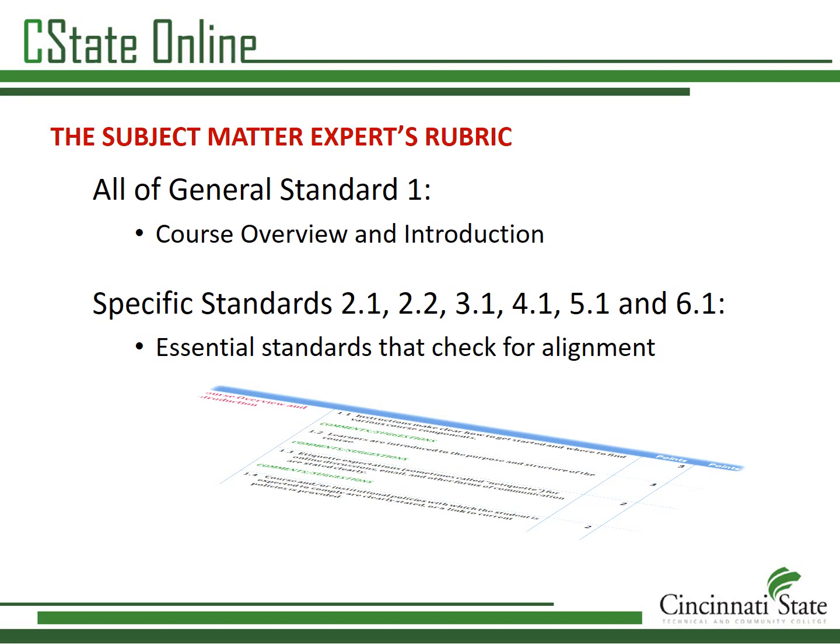Standards 2 through 6 are alignment standards and must be carefully assessed to make sure that all of the pieces fit together. When a course is aligned, students will know what skills they are expected to develop, how the teaching and learning activities will help them achieve the skills, and how they will be evaluated on those skills. Each standard should be evaluated carefully and commented upon. Your comments will show the course developer why you have assessed the standard to be met or not yet met.